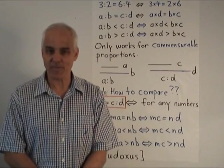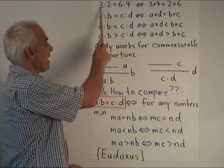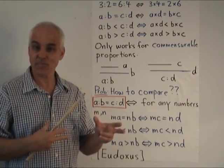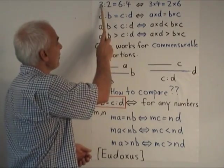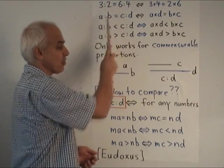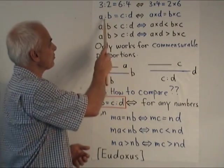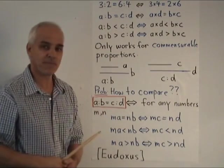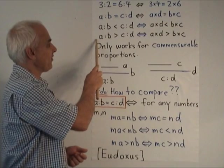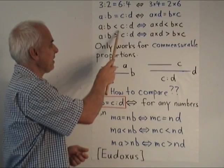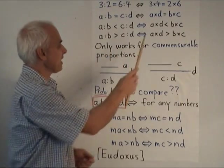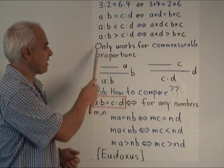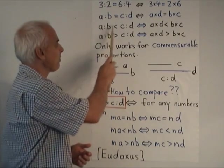Dealing with proportions that are commensurable is relatively easy. For example, if I have two magnitudes in the proportion three to two, and you have two magnitudes in the proportion six to four, we can easily decide that these proportions are actually the same. Because three times four is equal to two times six. So we would say in modern terms that these two ratios are the same. In abstract notation, A to B is equal to C to D, precisely when A times D equals B times C. And we can also express inequalities in the same framework. If we have numbers A to B, that proportion is going to be less than the proportion C to D, precisely when A times D is less than B times C, and similarly for greater than. But this kind of arithmetic only works for commensurable proportions, because we're multiplying numbers here.